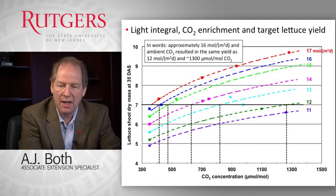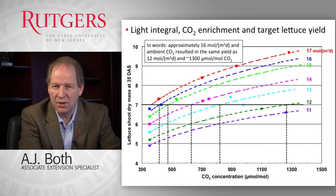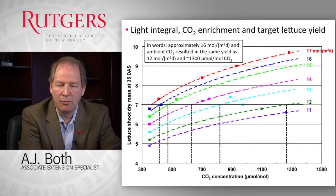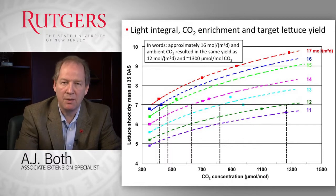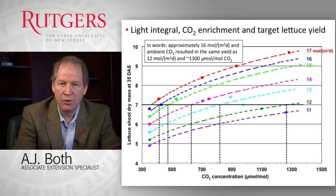What this graph is telling you is that within limits, you can try to increase the CO2 concentration and as a result you don't have to add as much light to get the same amount of growth. This can be an interesting proposition if you're trying to save money, because typically adding CO2 is cheaper than adding light. So think about whether this may be something you could implement for your crops as well.